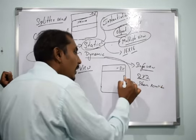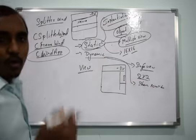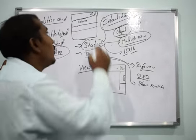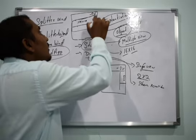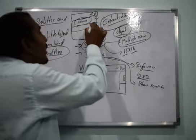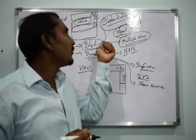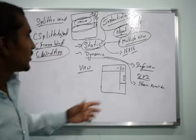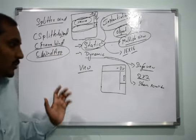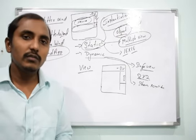In a Dynamic Splitter Window, two different panes share the same scroll bar. In contrast, with a Static Splitter Window, each pane has its own separate scroll bar. This concludes the concepts of Static and Dynamic Splitter Windows. Thank you — I'll continue with other topics in the next session.